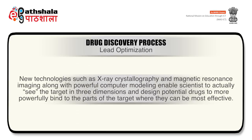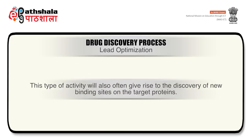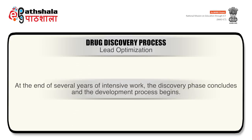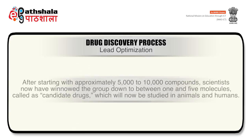New technologies such as X-ray crystallography and magnetic resonance imaging, along with powerful computer modeling, enable scientists to actually see the target in three dimensions and design potential drugs to more powerfully bind to the parts of the target where they can be most effective. This type of activity will also often give rise to the discovery of new binding sites on the target proteins. At the end of several years of intensive work, the discovery phase concludes and the development process begins. After starting with approximately 5,000 to 10,000 compounds, scientists have narrowed the group down to between 1 and 5 molecules — called candidate drugs — which will now be studied in animals and humans.